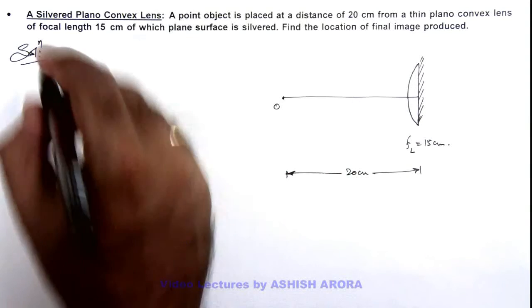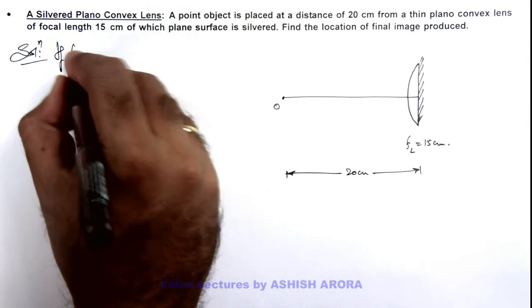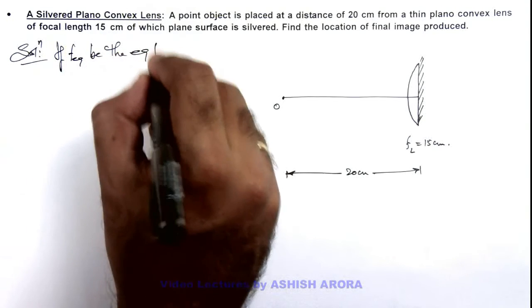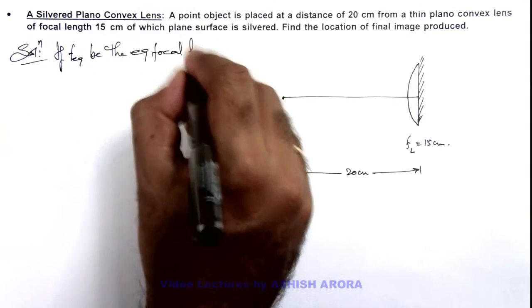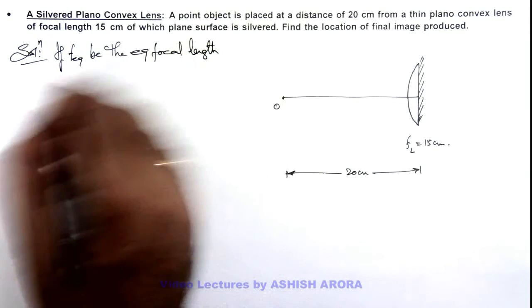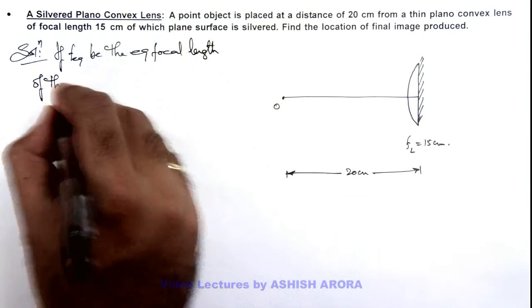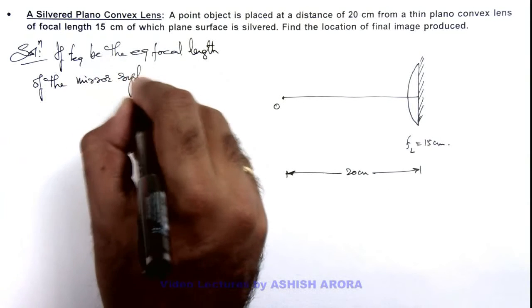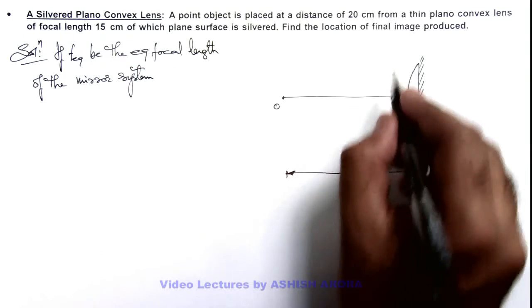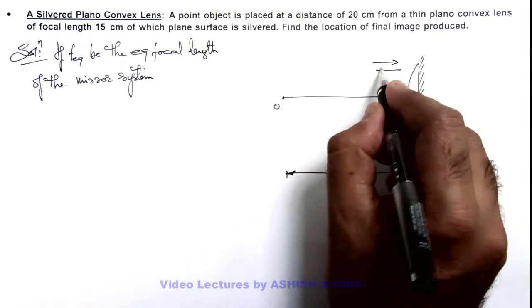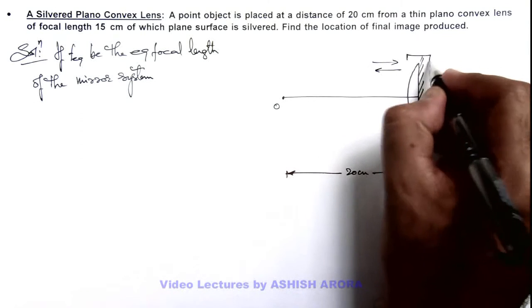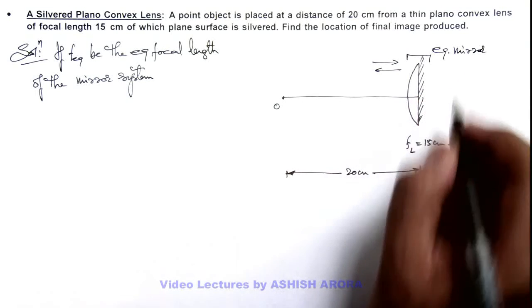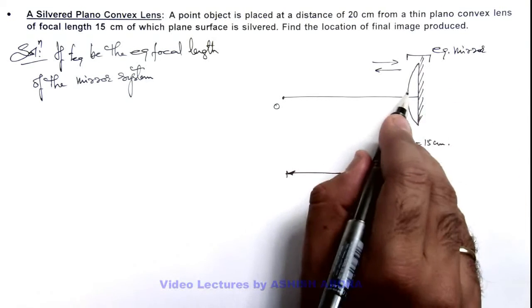So in this situation we can write if f_eq be the equivalent focal length of the mirror system. Here we can call it a mirror system because finally the light rays which are getting into it are coming back, so this behaves like an equivalent mirror which uses a lens, a mirror, and then again a lens.